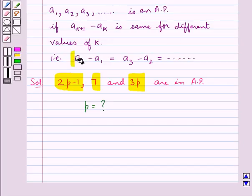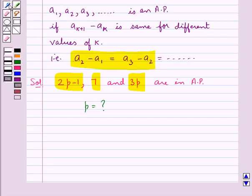A2 minus A1 would be equal to A3 minus A2. This means 7 minus 2P minus 1, the whole would be equal to 3P minus 7.